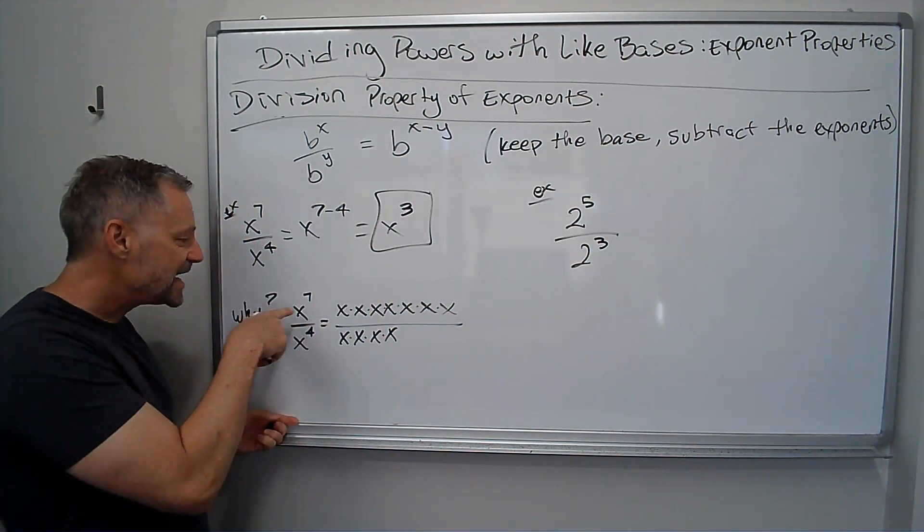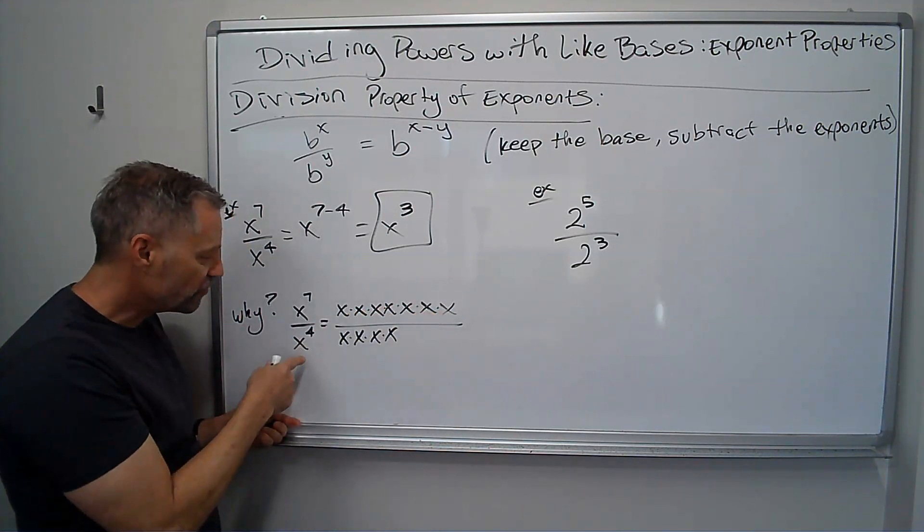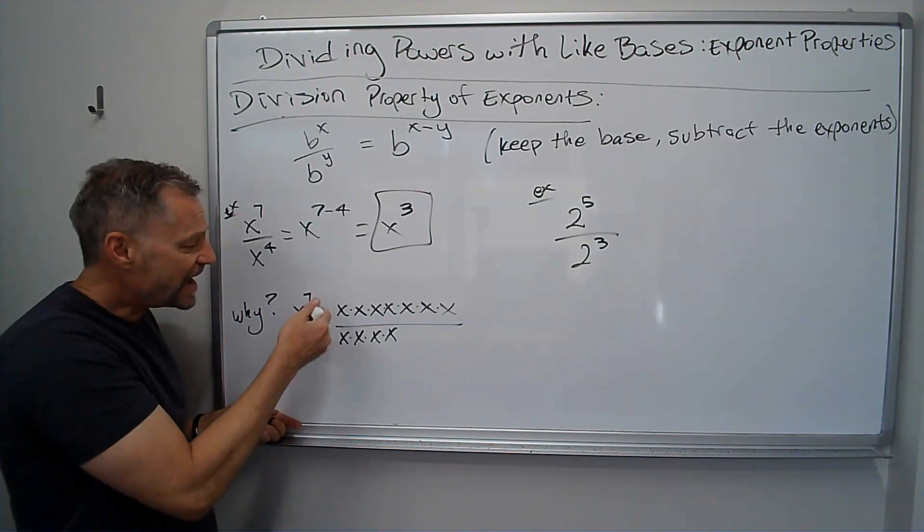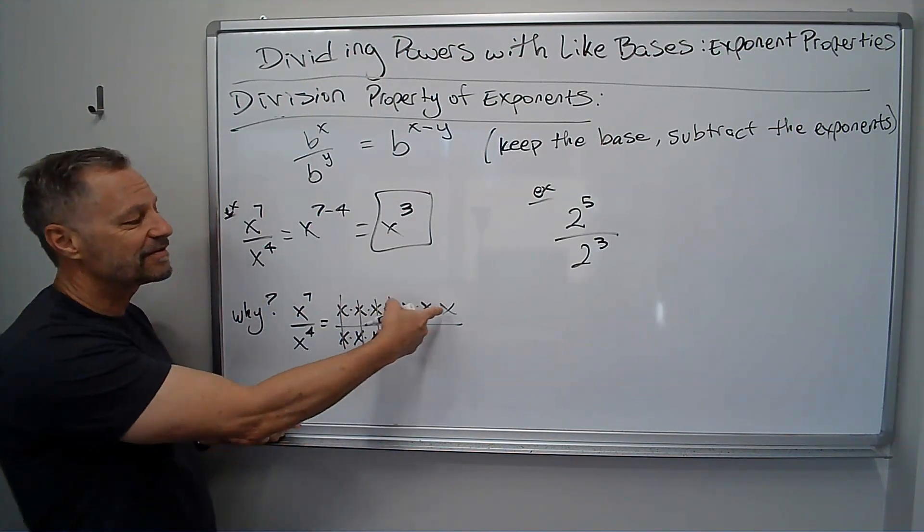Why is that the case? Here I put x to the 7th: 1, 2, 3, 4, 5, 6, 7 x's, over x to the 4th, 4 x's. Well, we know when I have common factors, I can just cancel those out to ones, and what do I have left? I have x to the 3rd.